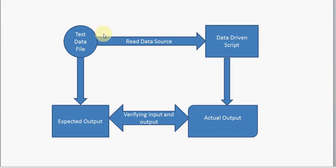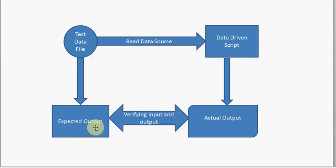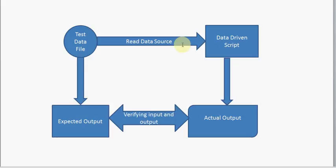I have put a flowchart diagram here to make it easier for you. This is the test data file — the data-driven script reads the data source, processes it, and produces the actual output. It then compares the actual output with the expected output. When it finishes processing the first record, it goes back to the loop and processes the second record from the test data file. This flowchart diagram gives you a clearer idea of how data-driven testing works.